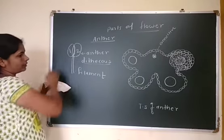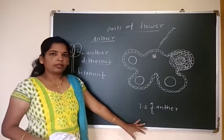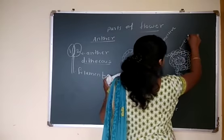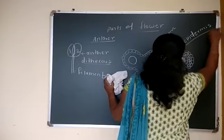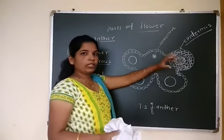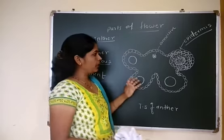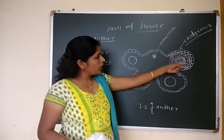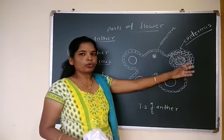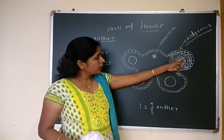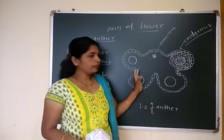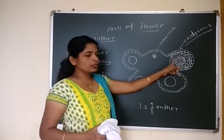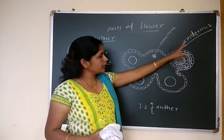If you take a section of such an anther, then it will look like this. Initially, an immature anther will have an outermost layer called epidermis. Inner to epidermis, there will be only parenchyma cells in the immature anther. Then parenchyma cells differentiate to form archesporial cells, from which outer protective layers like endothecium and middle layer are formed.